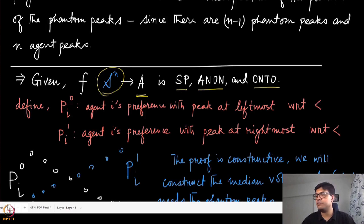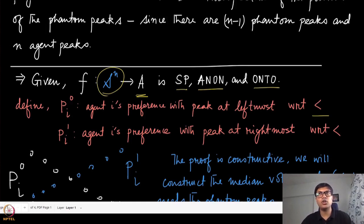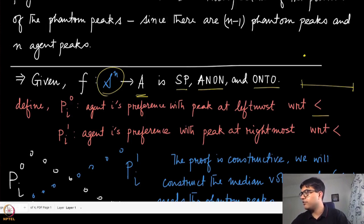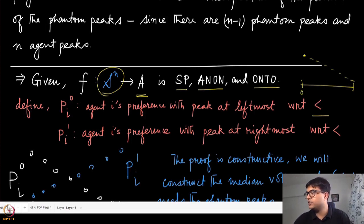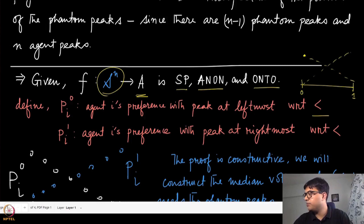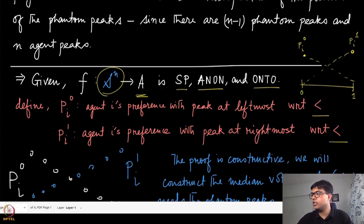Let us first define PI-zero and PI-one — this is just notation. PI-zero means that agent i's preference has its peak at the leftmost position with respect to the common ordering over all alternatives, with preferences going down from there as a single-peaked preference. Similarly, PI-one has the peak at the rightmost position. Zero and one are the two extreme points of the domain of all the alternatives.